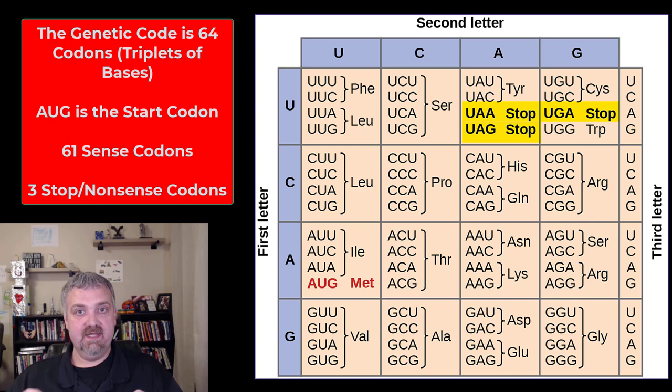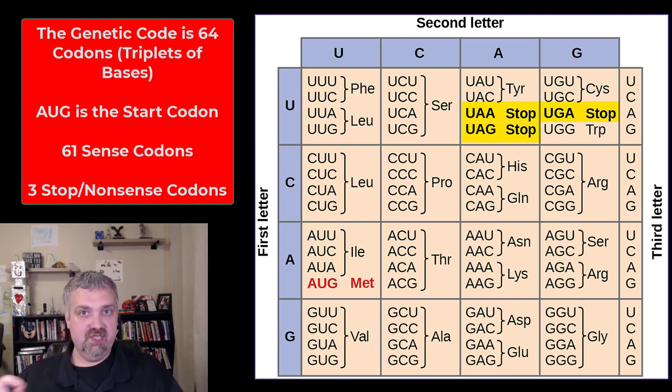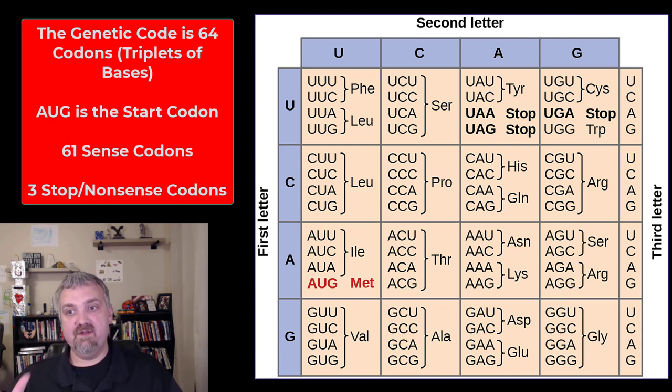Your three stop codons are UAA, UAG, and UGA. So you have your 61 sense codons, including the start codon, and your three nonsense codons.